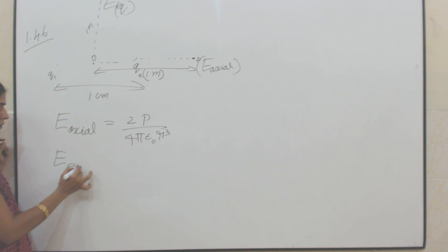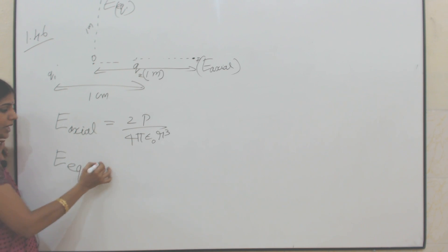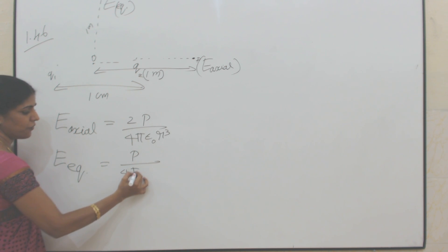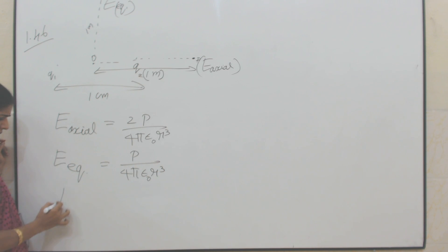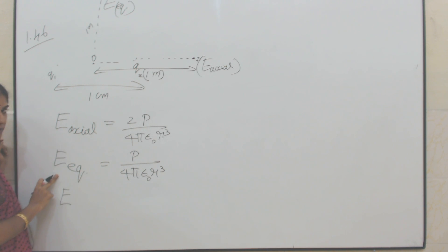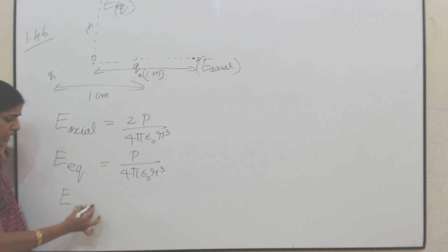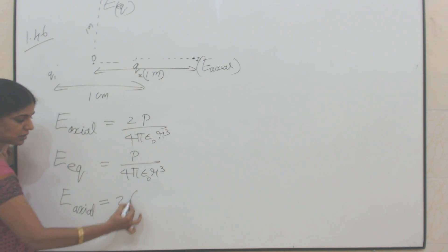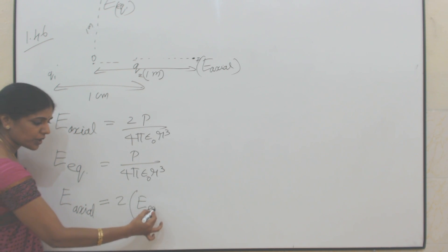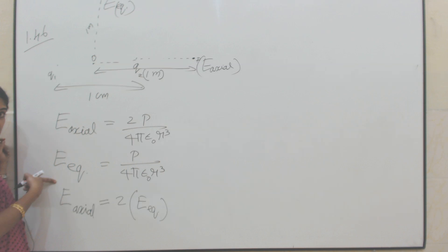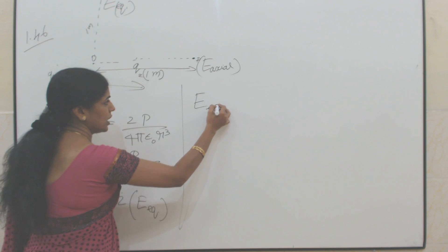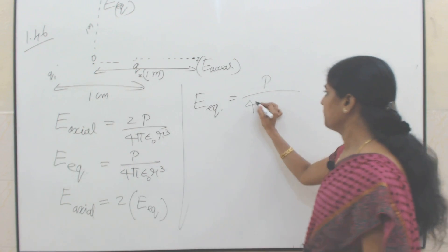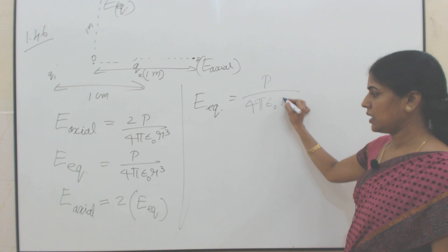The formula for electric field at a point on the equatorial line is E = P / (4πε₀R³). Between E-axial and E-equatorial, E-axial is greater than E-equatorial — in fact, E-axial equals twice E-equatorial. So first we calculate the electric field at a point on the equatorial line: E_equatorial = P / (4πε₀R³).